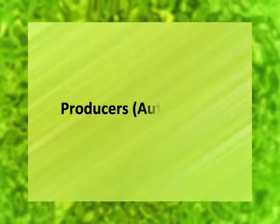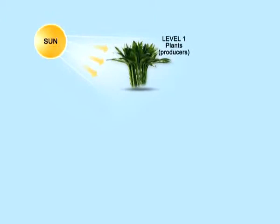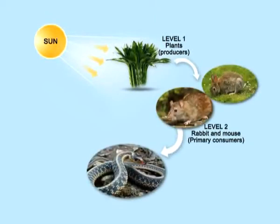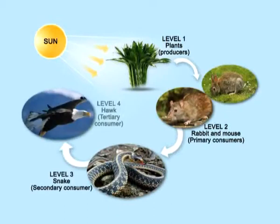Producers are autotrophs — those organisms which prepare their own food by using solar energy, chlorophyll, inorganic nutrients, and water. This process is known as photosynthesis. For example, plants, some photosynthetic bacteria, and algae. These are called producers of an ecosystem.